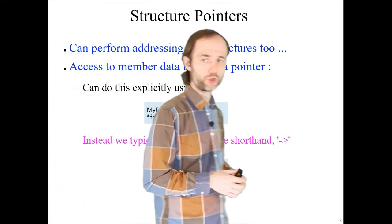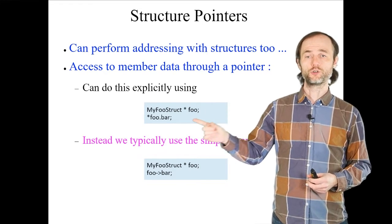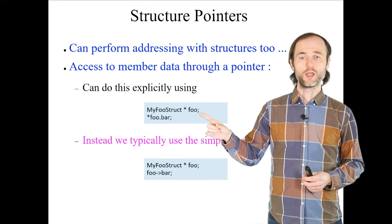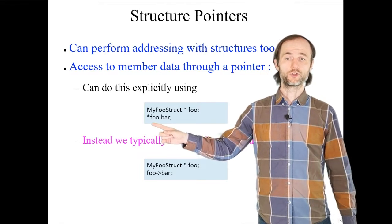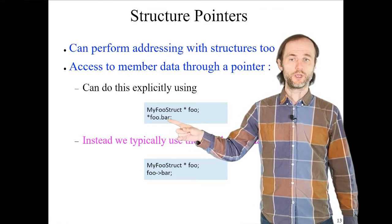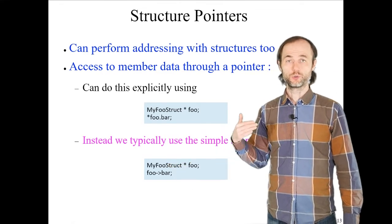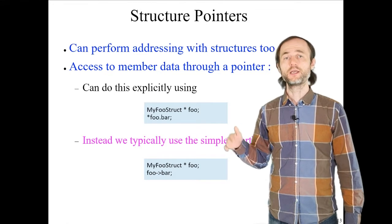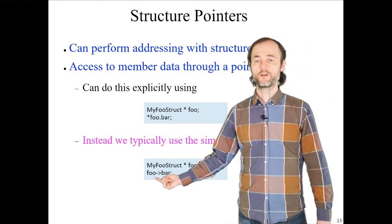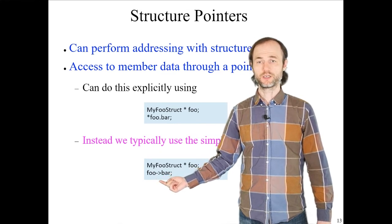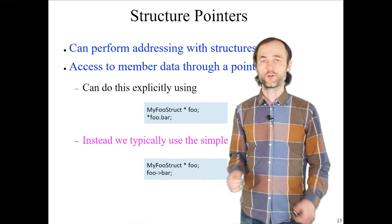We can also use pointers with structures. Declare a pointer to my_foo_struct named foo. You can access member variables by first dereferencing the pointer then using dot notation, but there's a more convenient shortcut: the right arrow operator typed as minus sign followed by greater-than sign. So 'foo->bar' accesses the bar variable of the structure to which foo points.